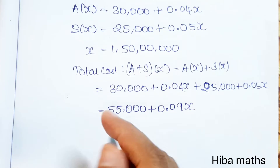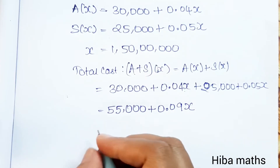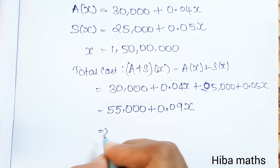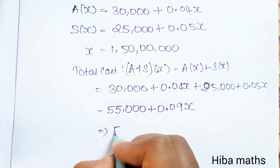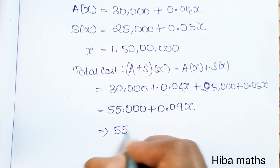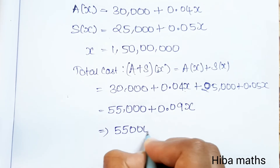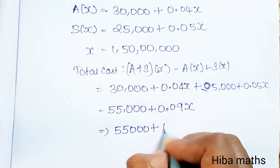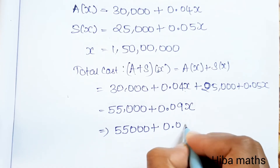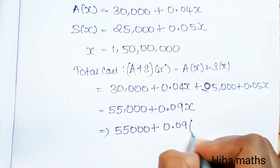Now we substitute x = 1,50,00,000 into the combined function 55,000 + 0.09x to find the total family income.